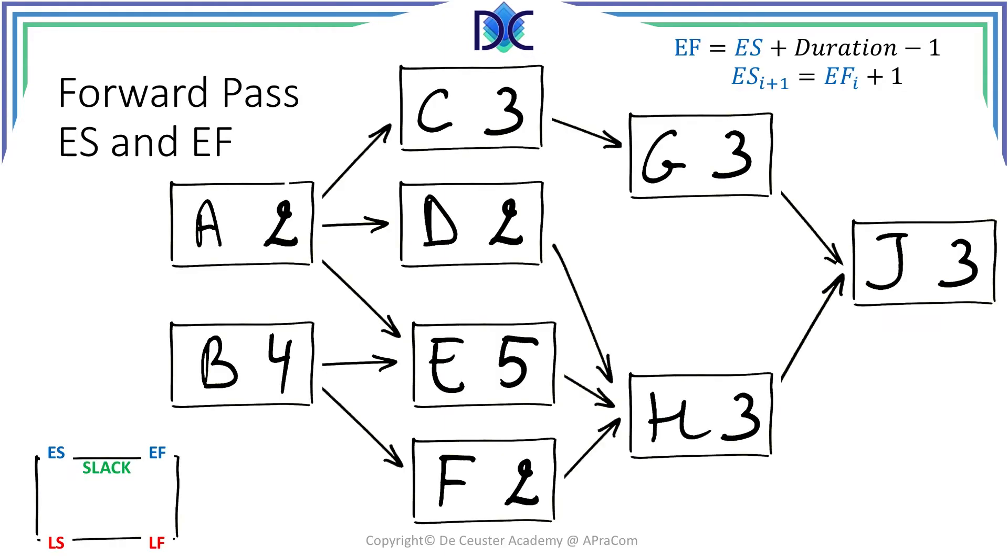Let's have a look at the forward pass and how we will calculate early start and early finish. On the left bottom side I put a small legend about the node, the activity node. On the top you find early start and early finish in blue and these are the parameters we are going to calculate. So if you are in doubt you can refer to this little legend to see what those numbers mean. On the top right side there are some formulas. I will come back to those formulas while we are going through the network.